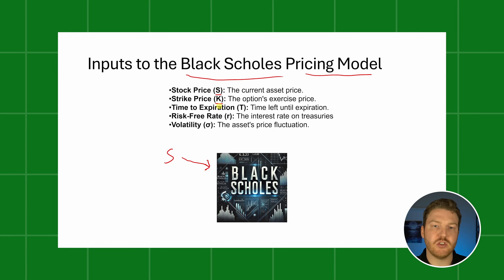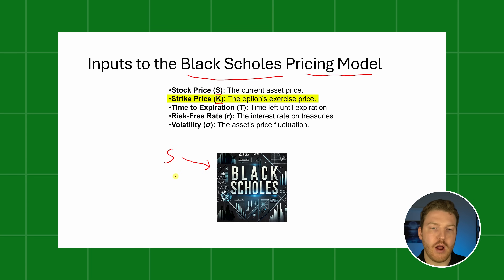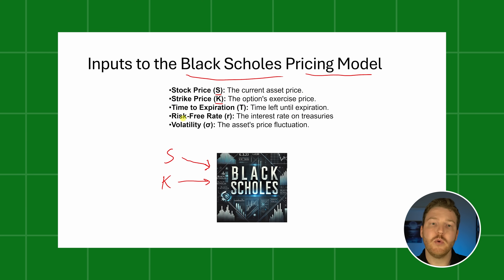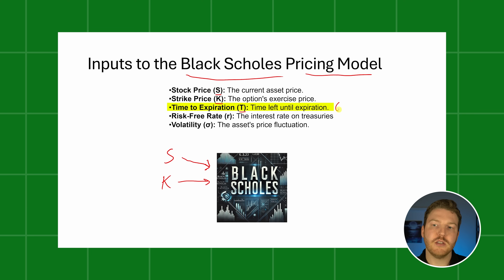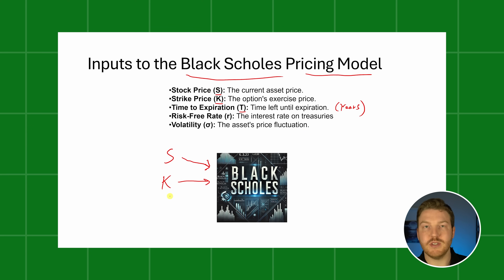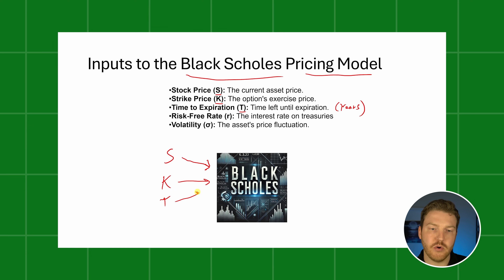The next input is the strike price, denoted as K, which is the option's exercise price — we pass that in as an input as well. Then we have the time to expiration, or T, which is the time left until expiration. This is typically measured in years, so if the option expired in one year, we would say T equals one.